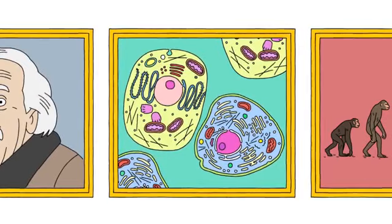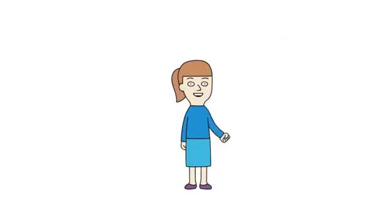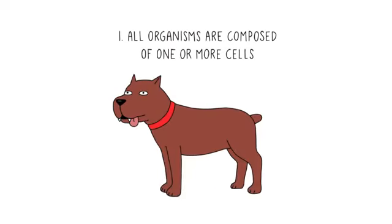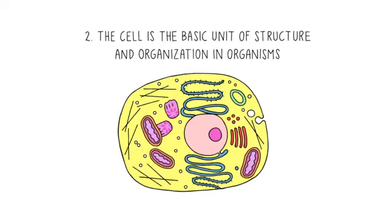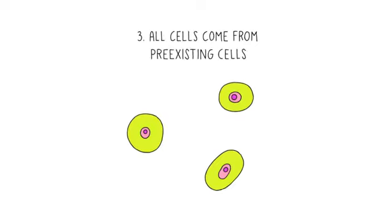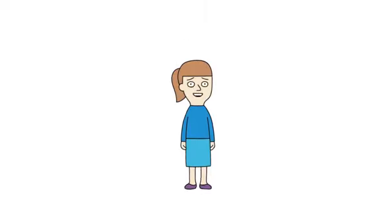My case in point, the weird history of the cell theory. There are three parts to the cell theory. One, all organisms are composed of one or more cells. Two, the cell is the basic unit of structure and organization in organisms. And three, all cells come from pre-existing cells.